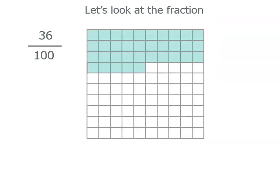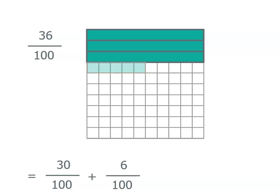So what we can do is remember what we did for fractions. If we used a model, there's 36 parts out of a hundred shaded, we could think of it as 30 hundredths plus another 6 hundredths. And the reason we did that was because 30 hundredths could be renamed as 3 tenths. So then we ended up with 36 hundredths is the same as 3 tenths plus 6 hundredths.